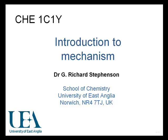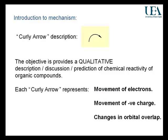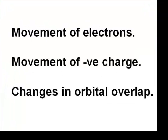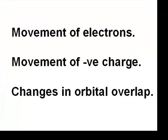When we nowadays write an organic mechanism, we are describing in a visual way the exact process of how these bonds are made and broken. We are going to use a simple arrow, but it represents three important features.